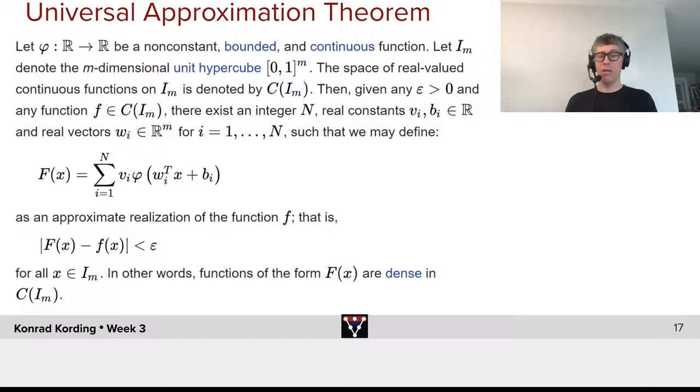It doesn't mean that this n is small. No, the uppercase n could be exponentially increasing as we make epsilon larger. So that means this is not a theorem that deals with practically we can approximate all functions that we're interested in. It just means that in principle, in the limit of infinite width, a single layer neural network, regardless of how the transfer function looks like, as long as it's non-constant, bounded, and continuous, can approximate any function here.